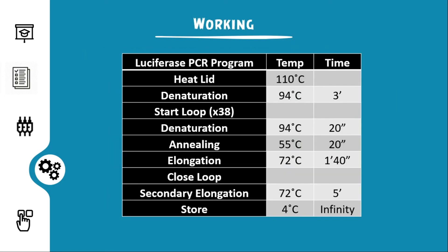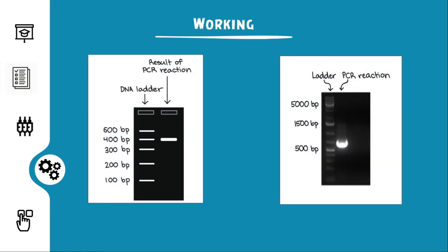This is an example of a thermocycler program. After amplification, the product is checked on a gel so as to verify its size. This is a gel electrophoresis picture of a particular gene after amplification. We could see it being compared to a marker ladder. The detailed explanation of gel electrophoresis would be dealt with in future lectures, so stay tuned.